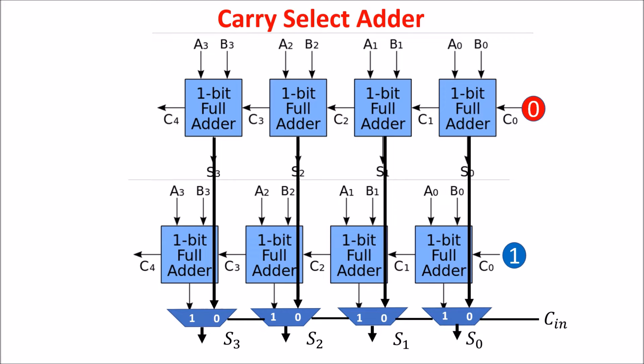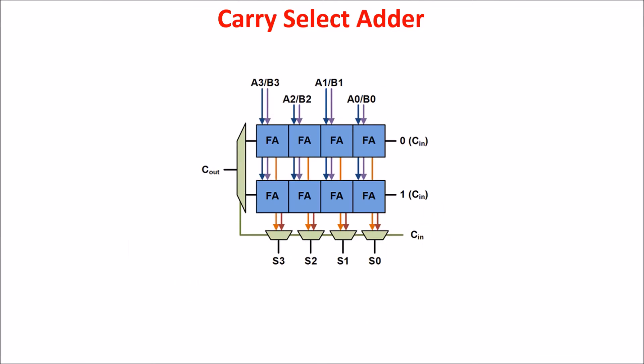For the carry out also, we select the right C4 through a multiplexer controlled by the carry-in. Here we draw this block in a more compact way.